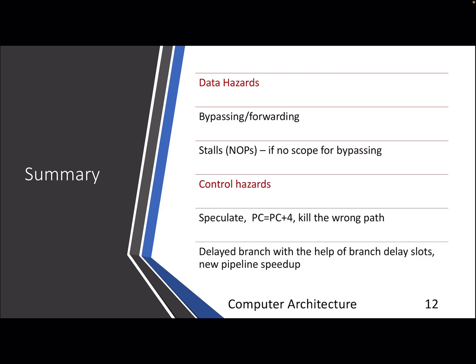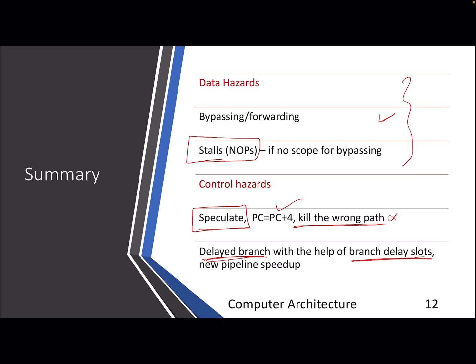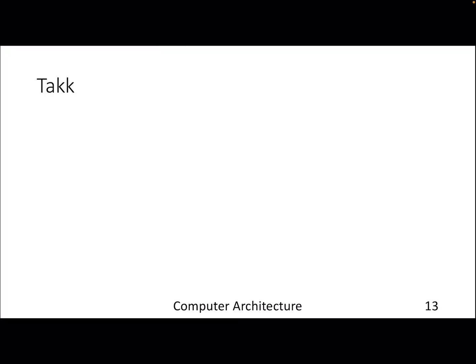In summary: we discussed data hazards in previous lectures and ways to mitigate them — either bypassing/forwarding, or stalling the pipeline by introducing NOPs. For control hazards, the simple idea is to speculate that you always go to PC+4 and kill instructions on the wrong path when you mis-speculate. Delayed branch is an effective technique as long as you know what to put in the delay slot, and branch delay slots can reduce some control hazard stalls. Because of all these stalls, the pipeline speedup is no longer limited only by the number of stages — it goes down further. Thank you.